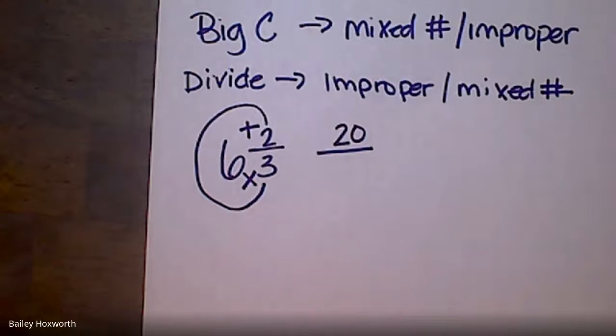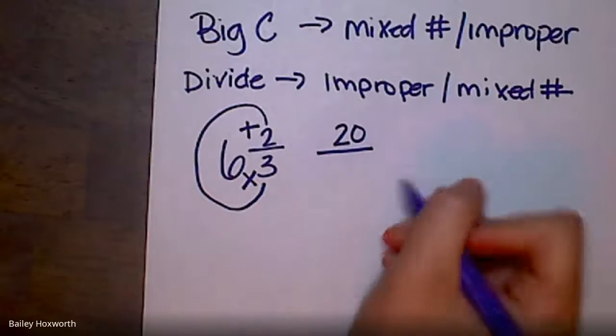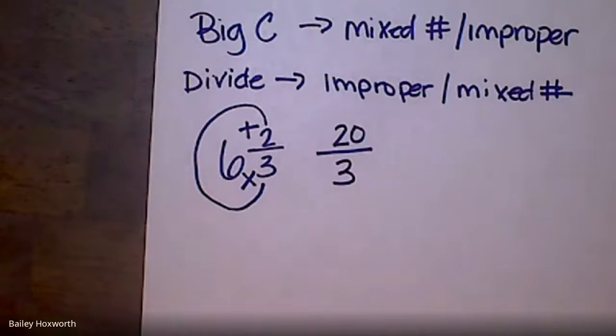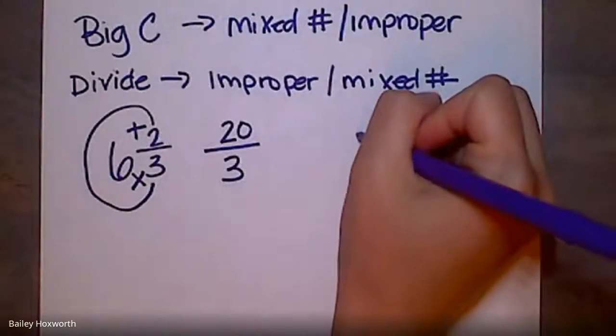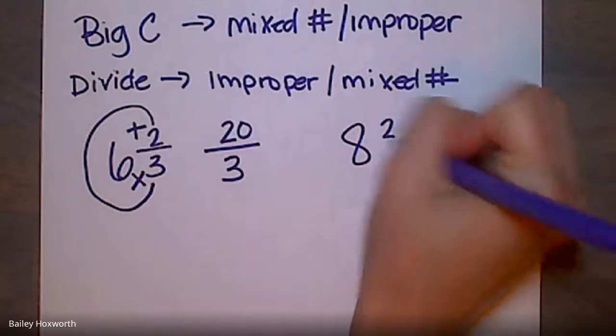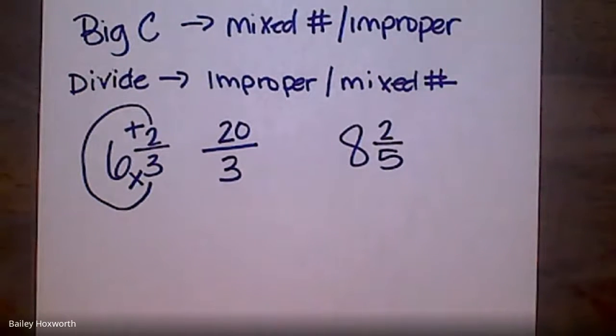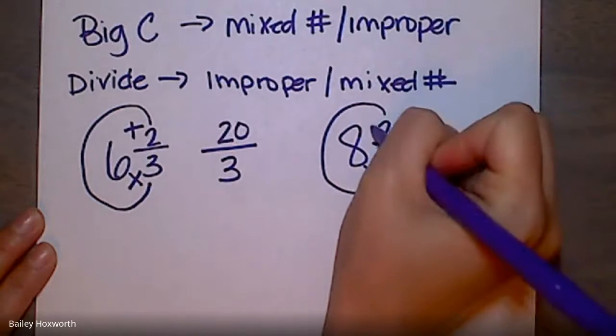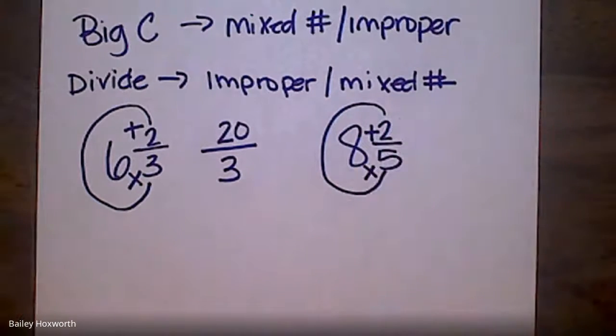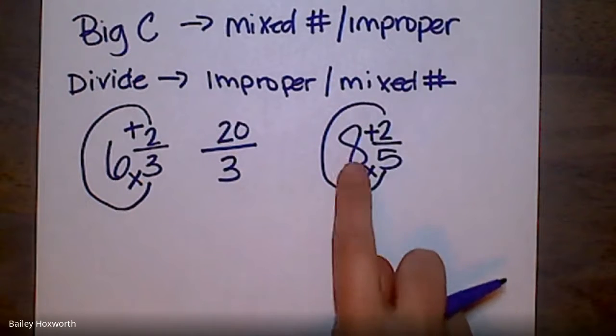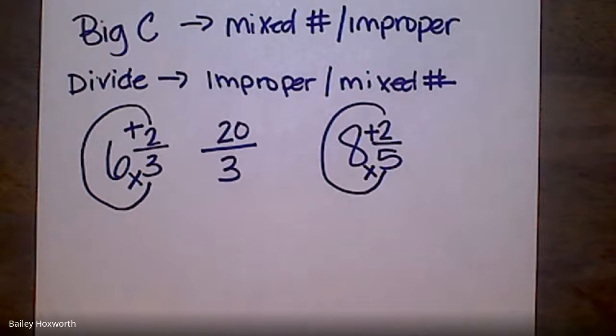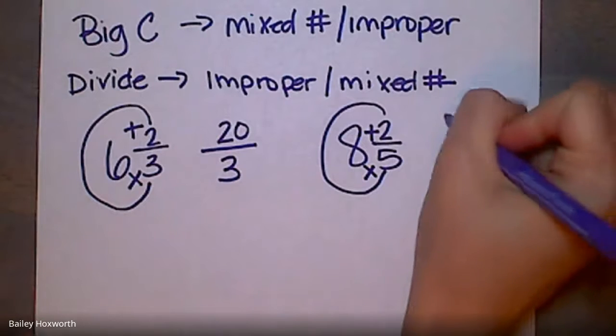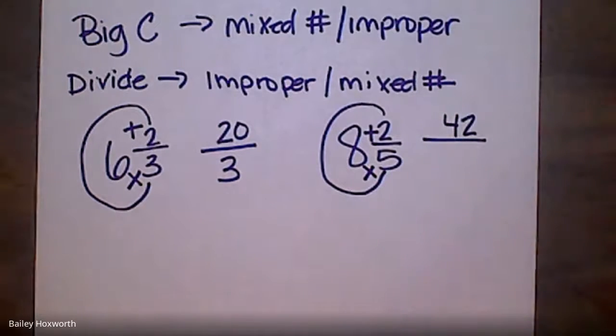Bam, easy peasy, done. Let's try again. 8 and 2/5, I want to turn this into an improper fraction. Draw your Big C, multiply the bottom, add the top. 5 times 8 is 40, plus 2 more is 42. So 42 is my new numerator. What's my denominator? 5, wonderful.